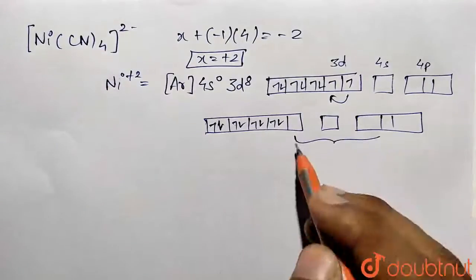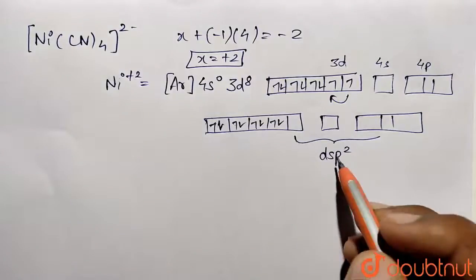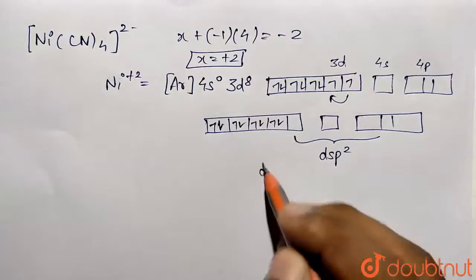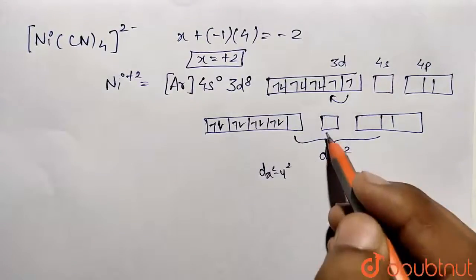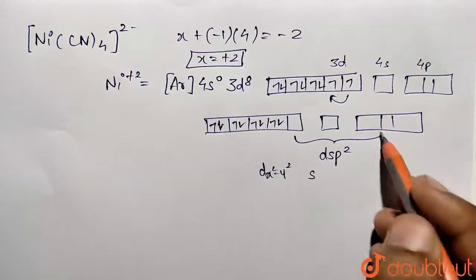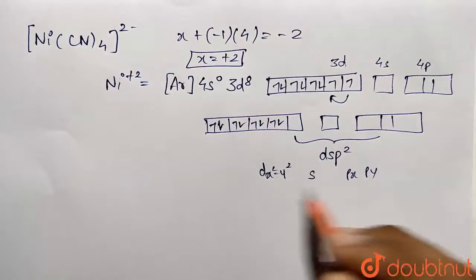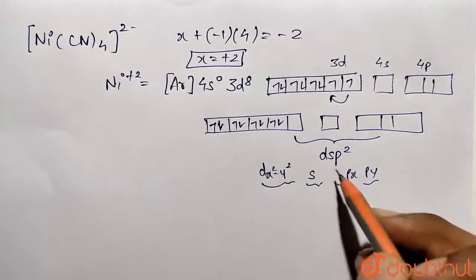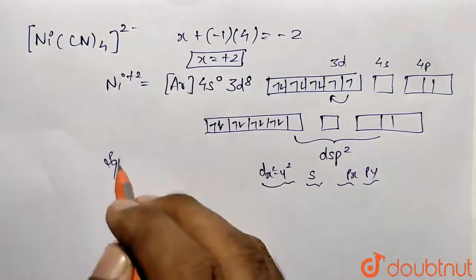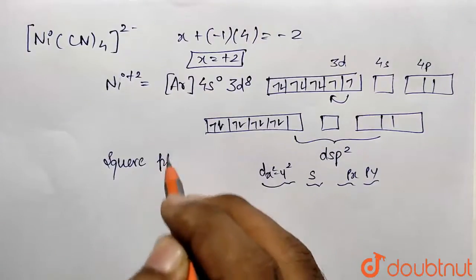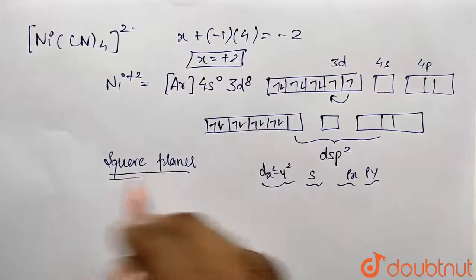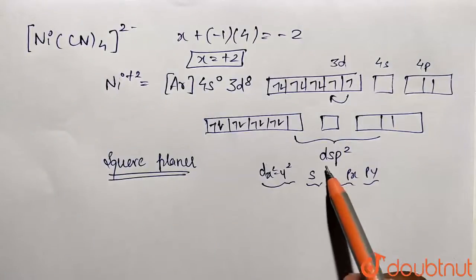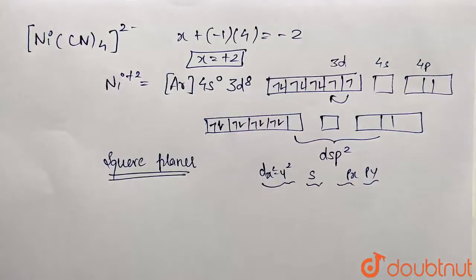We need to have a total of four orbitals for the arrangement of the ligand. So it is undergoing dsp² type of hybridization, which we are talking about. This is our dx² - y² and it is contributing s, and it is contributing px and py. This is how the contribution takes place, and this is going to form square planar geometry.